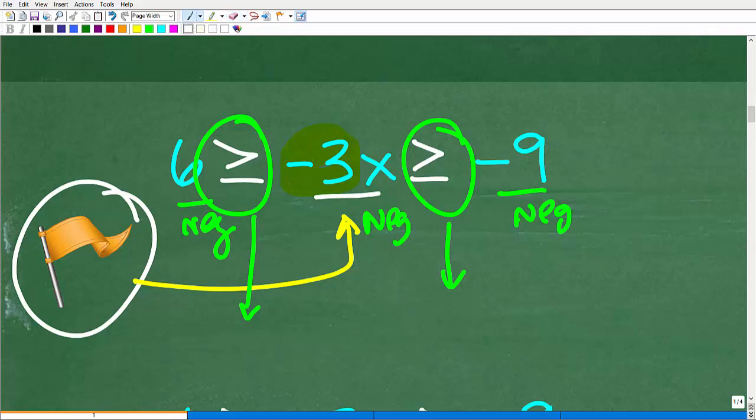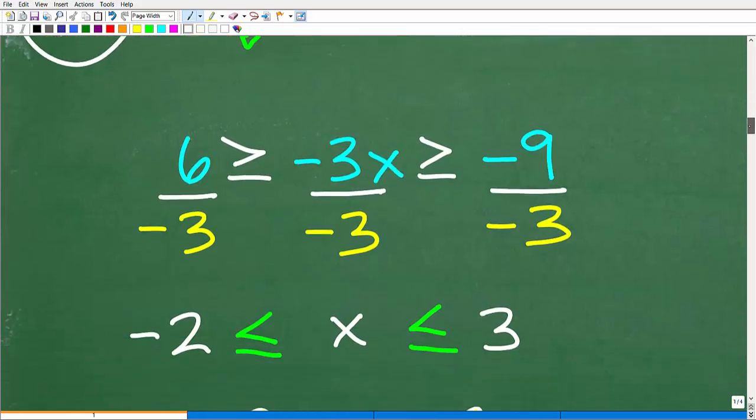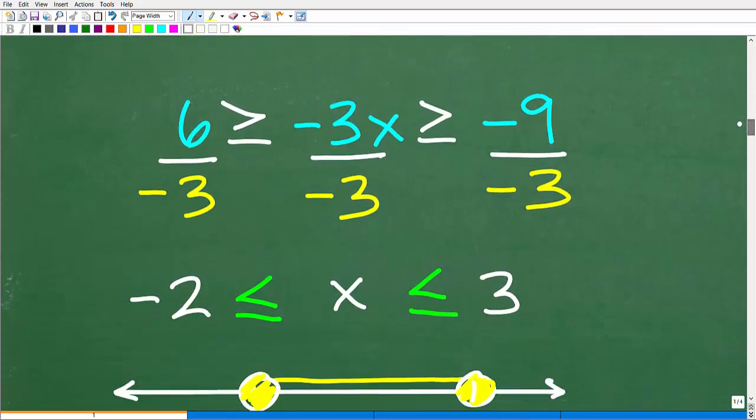Now, I know that's a lot of side talk to this solution, but the whole point of this video is to help you prevent errors, and especially errors that you know better not to make. So now, to get x by itself, I know I'm going to have to divide by -3 here and here and here.